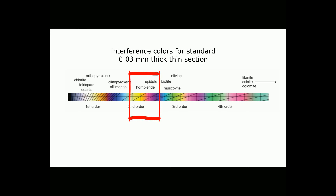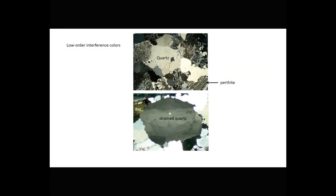So we might say that hornblende has middle to upper second-order colors, and not worry about whether it was pink or orange or yellow. Typical minerals that display low-order interference colors include quartz and the feldspars. In these two views, we see large grains of quartz. In the top view, we can see perthite, which is a potassium feldspar.